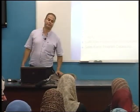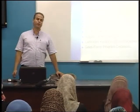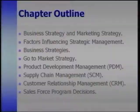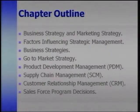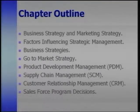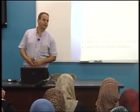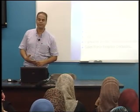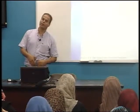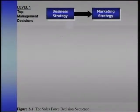Let's talk about the outline of our chapter. The outline focuses first on business strategy and marketing strategy, then factors influencing strategic management, third business strategies, fourth go-to-market strategy, then product development management, supply chain management, customer relationship management, and finally sales force program decisions. This is the outline governing Chapter 2.